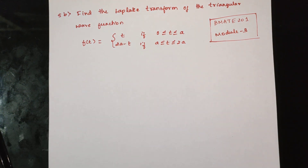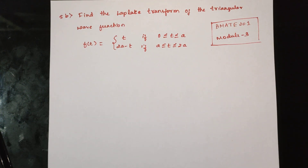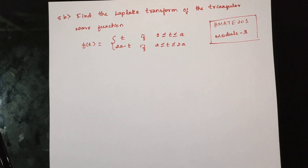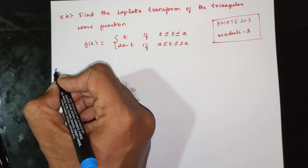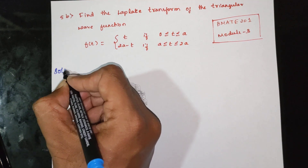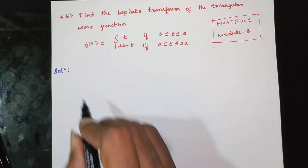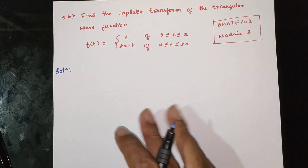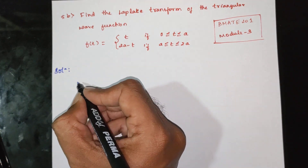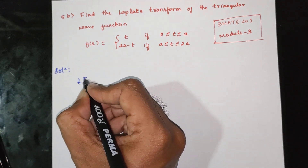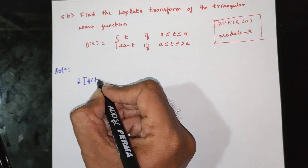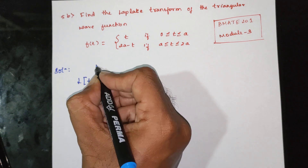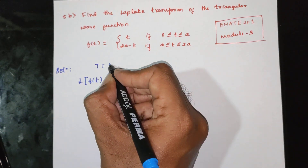Find the Laplace transform of a triangular wave function: f(t) equals t for 0 to a, and 2a minus t for a to 2a. First of all, this is a periodic function with period T equal to 2a.